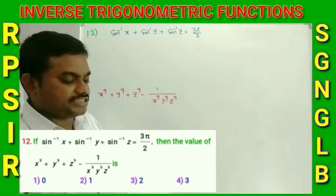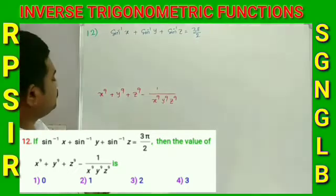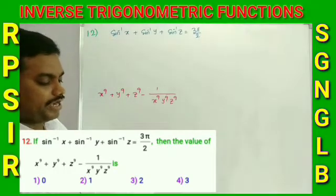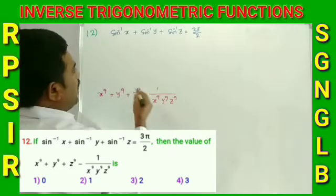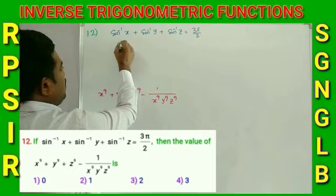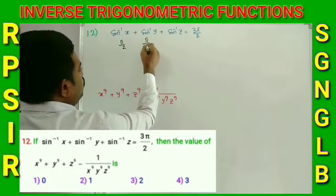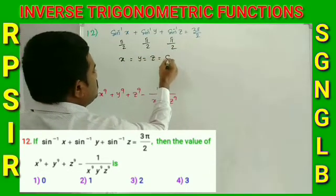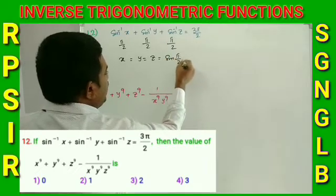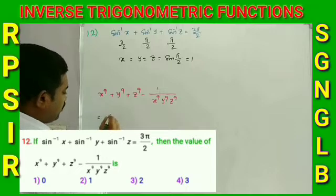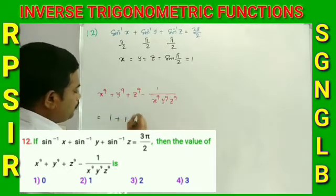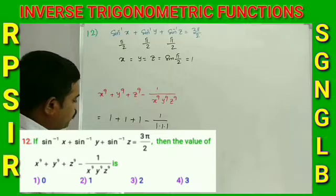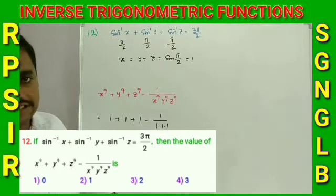Number 12: If sin⁻¹(x) + sin⁻¹(y) + sin⁻¹(z) = 3π/2, find x⁹ + y⁹ + z⁹ - 1/(x⁹y⁹z⁹). Since the sum of three terms equals 3π/2, each equals π/2. So x = y = z = sin(π/2) = 1. Substituting: 1⁹ + 1⁹ + 1⁹ - 1/(1×1×1) = 3 - 1 = 2. Option 3 is the correct answer.